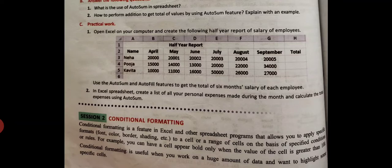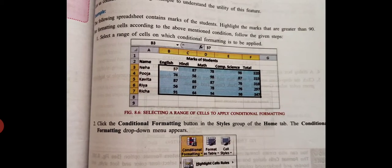Conditional formatting is useful when you work on a huge amount of data and want to highlight some specific cells. For example, we have a list of students along with their marks. I want to mark those students with red color who got less than 40. I want to highlight those with some color, so for that we use conditional formatting.